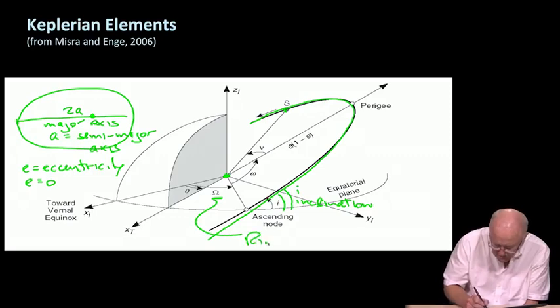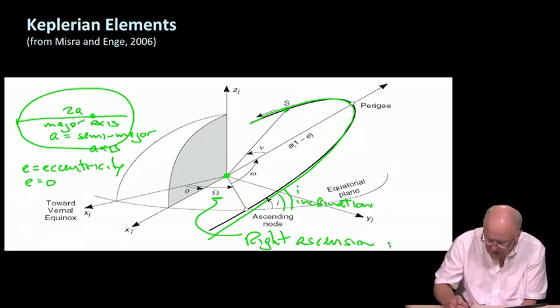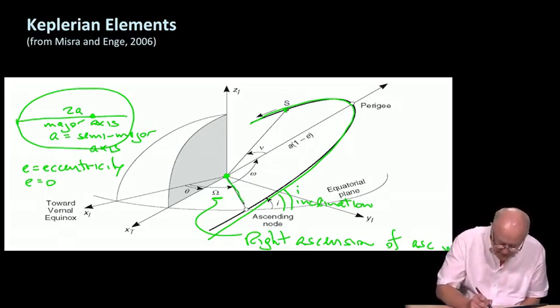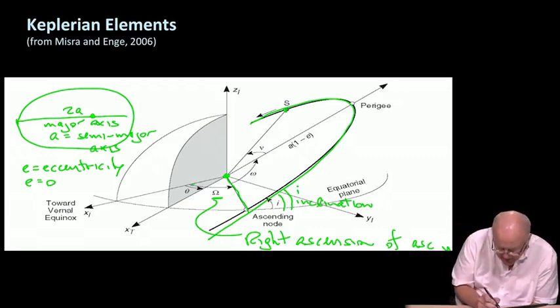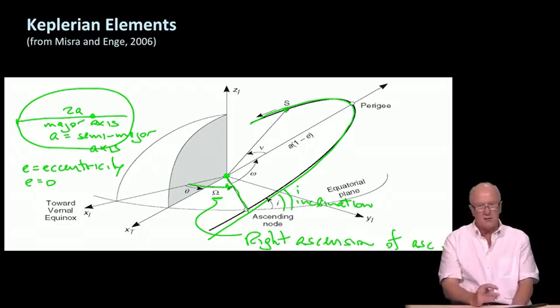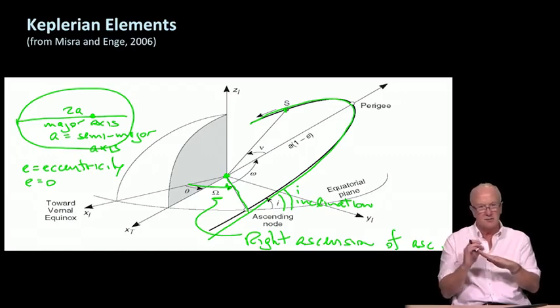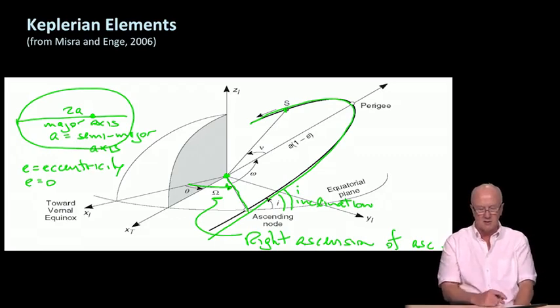The next angle that's important is capital omega. It's called the right ascension of the ascending node. It is the angle made by this vector that goes from the Earth center out to the location where the satellite punches upward through the equatorial plane. That's this capital omega, this angle here. It turns out that in the case of GPS, the orbits, the satellites, are organized into six different orbits. Those six different orbits differ mainly by this capital omega. You can kind of imagine a fan of orbits as you go around and look at the GPS constellation.